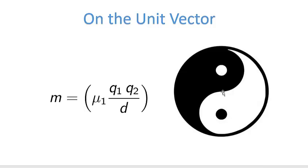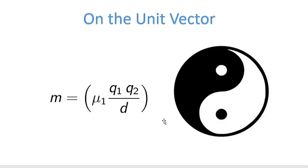Nature cares about charge separation and boundary conditions. Radius might just be an emergent property of a boundary condition — i.e., the circumference of the circle. The radius is circumference divided by 2 pi. So what we're going to find is that charge separation and boundary condition are, in fact, closer to the truth in terms of constants of nature.